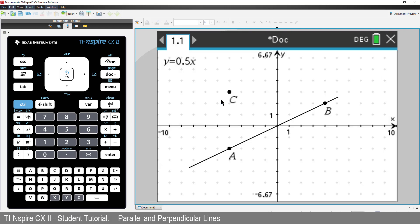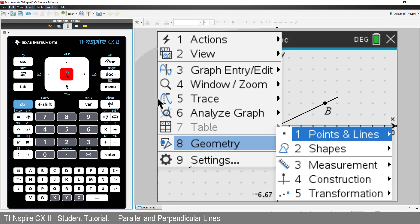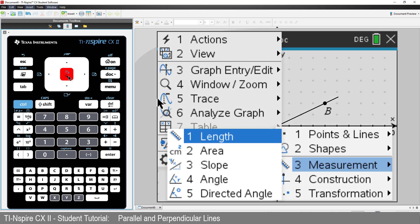We can see that the slope is key when it comes to parallel lines. We can use the Geometry tool to measure the slope or gradient of the original line. Press Menu, Geometry, Measure, and select Slope.